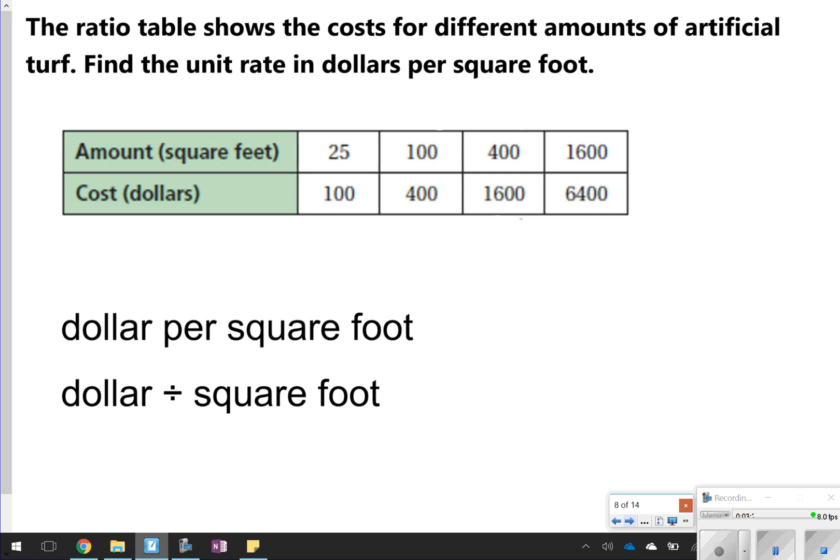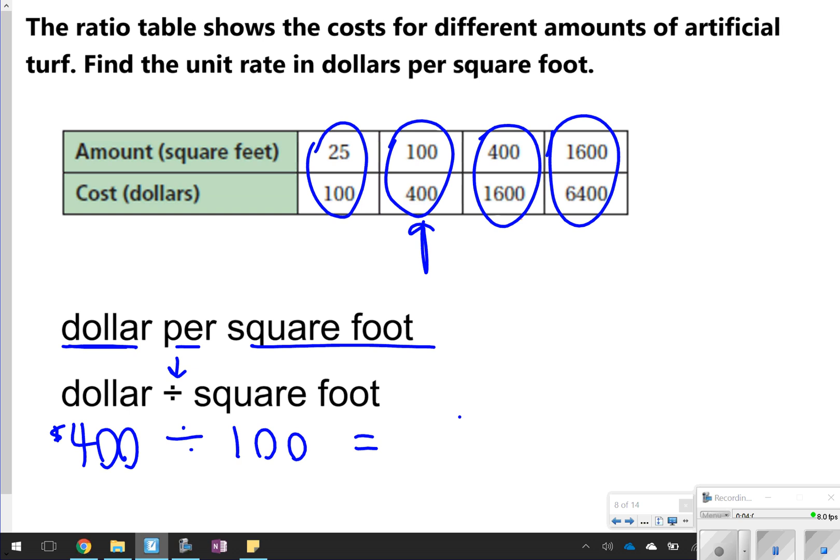Another way you can use this is whenever you're trying to find unit rate. This one says the ratio table shows the cost for different amounts of artificial turf, so find the unit rate in dollars per square foot. An easy way to remember how to find unit rate is anytime it says the order, dollar per square foot, that means you're going to do dollar divided by square foot. So basically what you could do is use any of these two groups of numbers and just take the dollar amount and divide it by the square foot amount. I'm going to use this one just because it's in the middle of the table somewhat, and I'm going to take $400 and divide it by the 100 square feet, and I would get 4. So my answer would be $4 per square foot. So it's very easy. It literally tells you the exact order that you're supposed to divide, so just make sure that you pay attention whenever it says dollar per square foot. That means dollar divided by square foot, or miles per hour would be miles divided by hours.